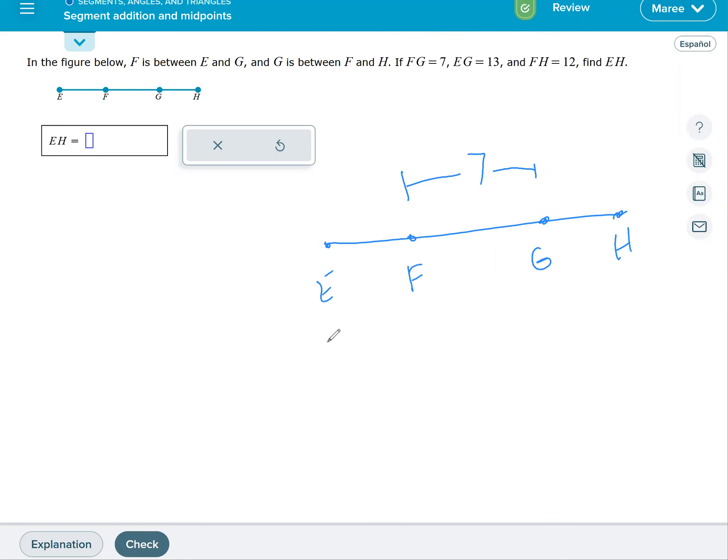EG is 13. FH is 12. Find EH. So I want the whole thing. So we're going to have to break this up a little bit. I can find this little piece here by taking 13 minus seven, which is six.